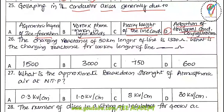Twenty-sixth question: the charging reactance of a 50 km length of line is 1500 Ω. What is the charging reactance for a 400 km length? Since Xc is inversely proportional to length, as length doubles the reactance halves. Applying the relationship: 1500/2 = 750 Ω.